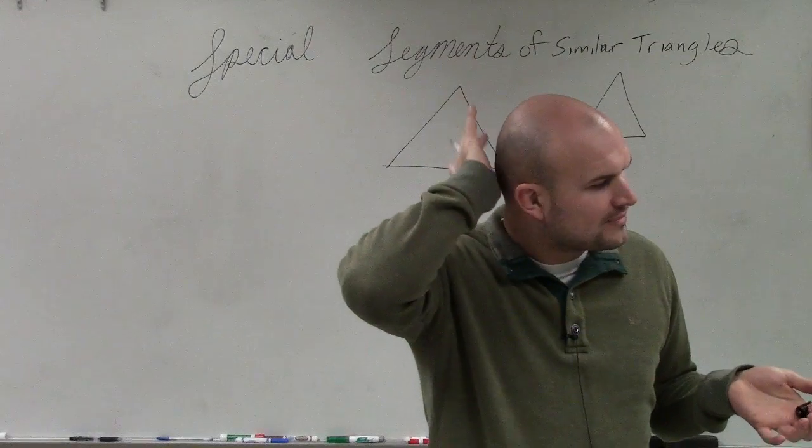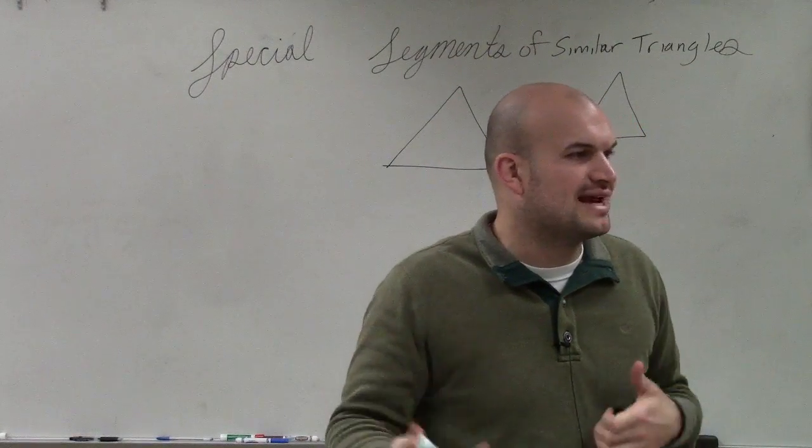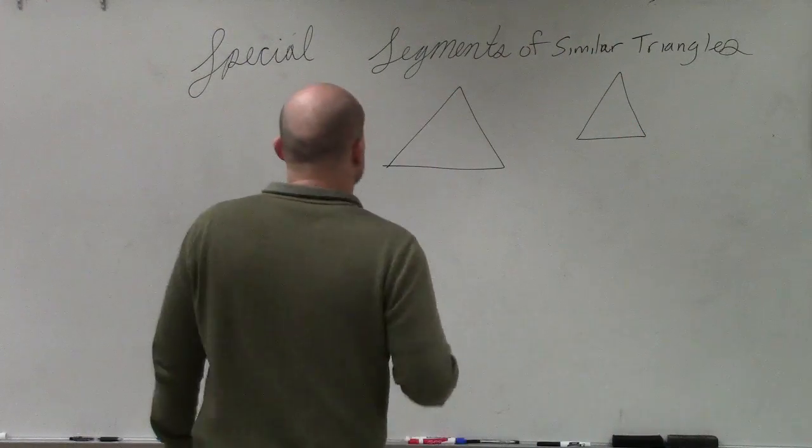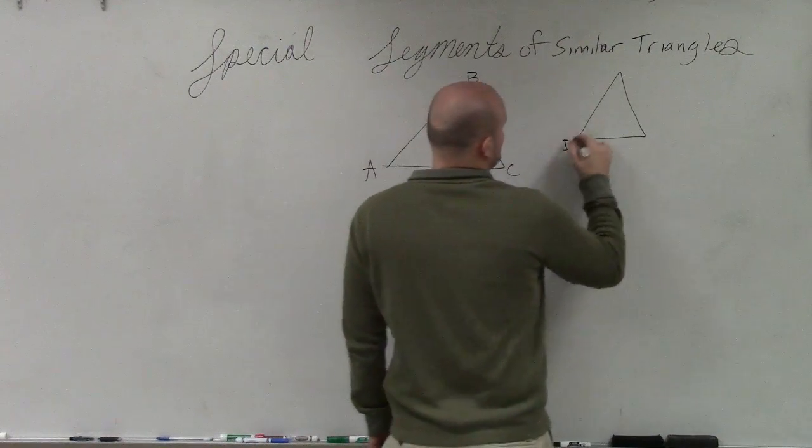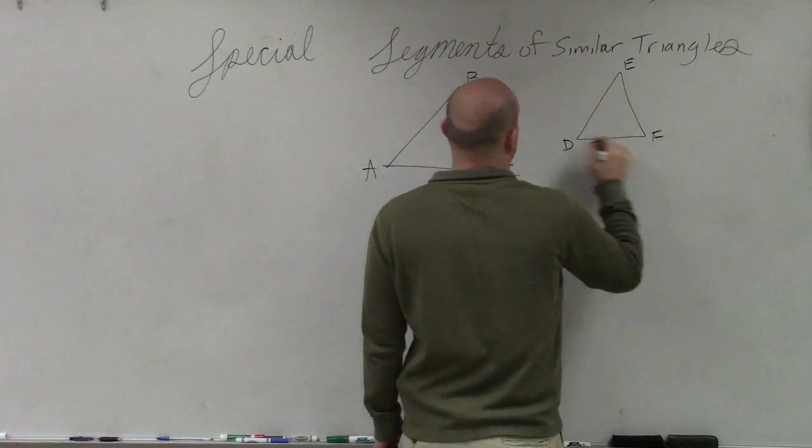So when we talk about similar triangles, we've talked about that they have the same shape, but not necessarily the same size. So if I just kind of give you two generic ones, and let's see D, E, and F.